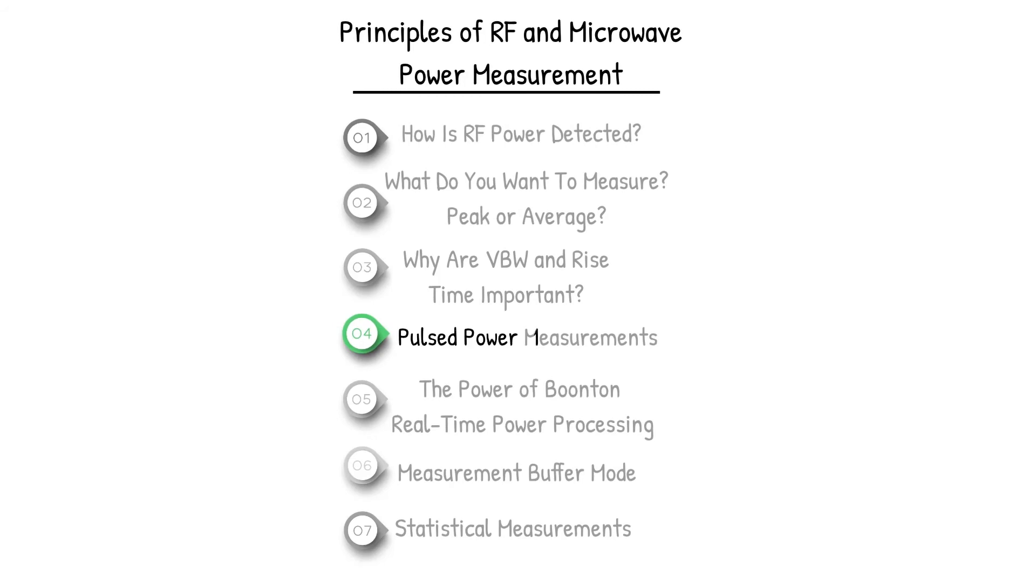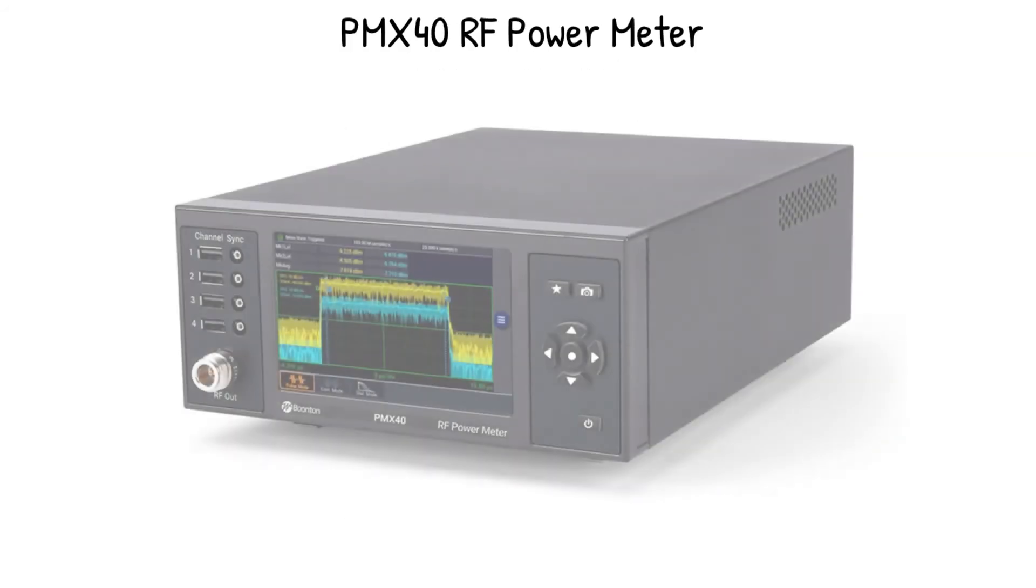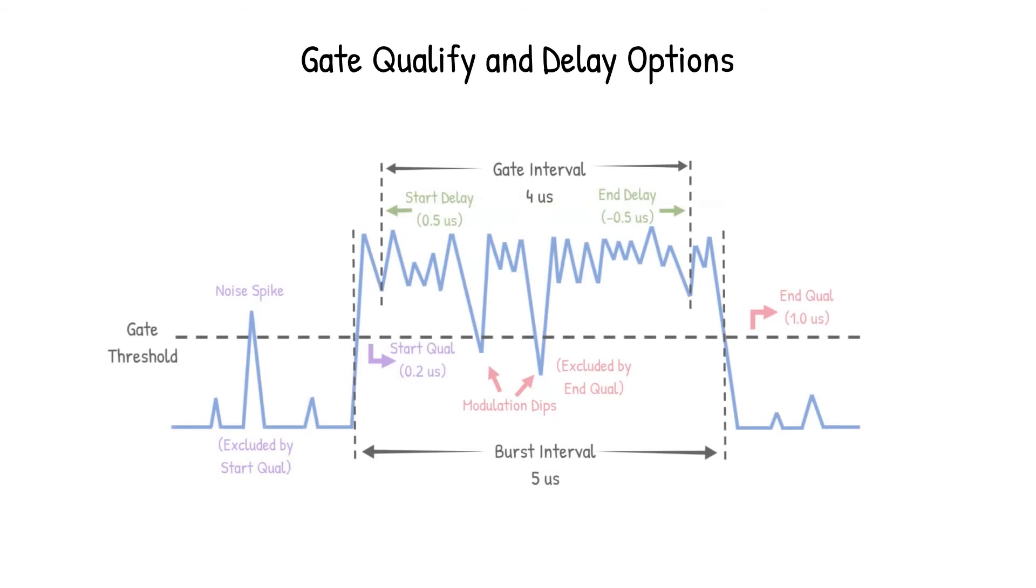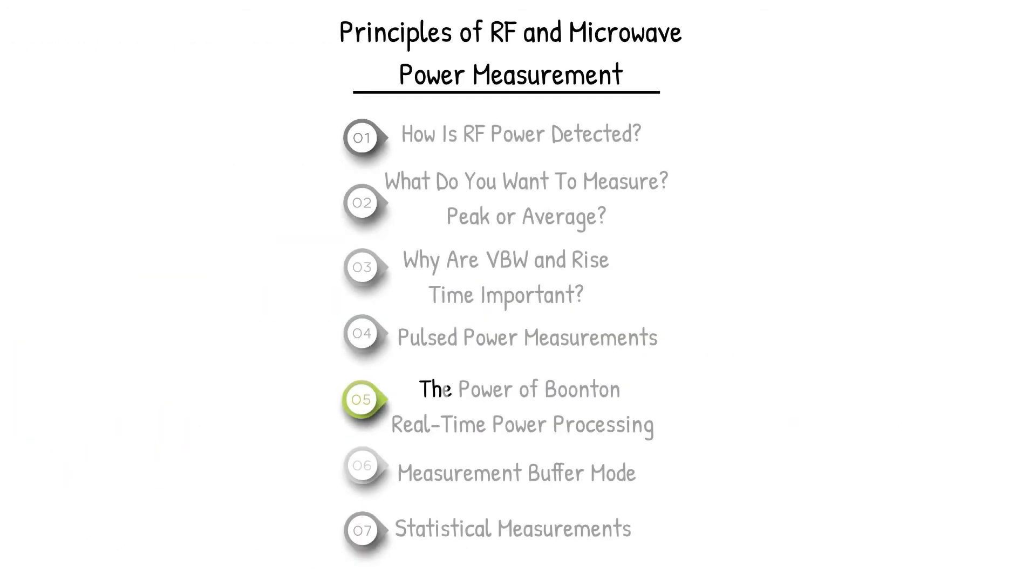Pulsed power measurements are utilized in many applications, and Boonton's power meters provide up to 16 automatic pulse measurements, as well as gate qualifiers and delay options to include or exclude portions of a pulse.